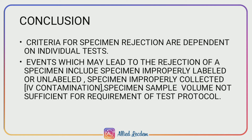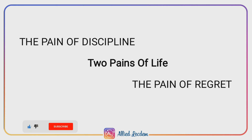Conclusion: criteria for specimen rejection are dependent on the individual test. Events which may lead to the rejection of a specimen include: specimen improperly labeled or unlabeled, specimen improperly collected, IV (intravenous) contamination, and specimen sample volume not sufficient for the requirements of the test protocol. Thank you.